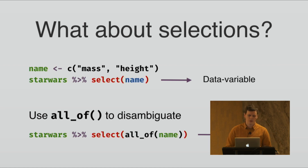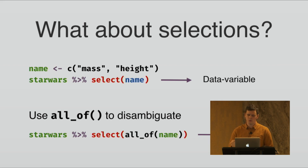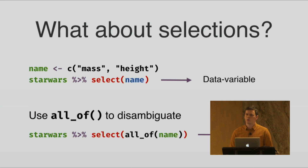Let's say that you have a character vector of column names assigned to an environment variable called `name`, and the starwars data frame also contains a data column called `name`. If you write `select(name)`, that's a data variable, so you will be selecting the column `name`. And if you want to disambiguate and use the character vector that you have saved in your workspace, you use `all_of`. If you are familiar with `one_of`, `all_of` is a little bit stricter and has better properties — when you use `all_of`, you are expecting all the columns in the character vector to be in the data frame, and if they are not there you will get an error, whereas `one_of` was throwing a warning instead.